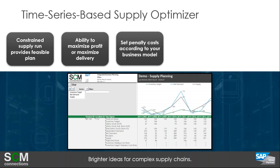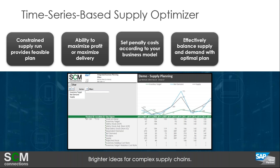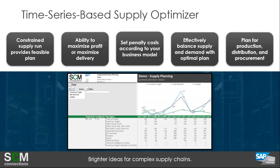It takes into account hard constraints that really cannot be violated, such as capacity constraints. You can also set different penalty costs associated with different actions you can personalize to your own business model, such as customer non-delivery rate. You could set that cost to be extremely high so the optimizer tries everything it can not to violate that. It effectively balances supply and demand, provides a cost-optimal feasible plan, and not only plans for production and distribution but also procurement — looking at your supply chain holistically, not in silos.